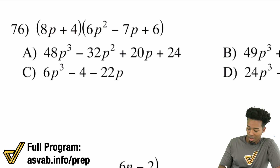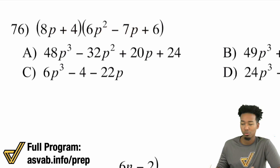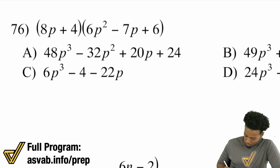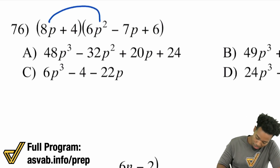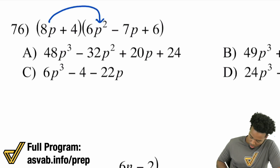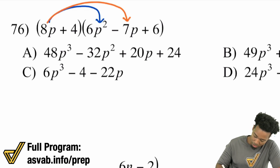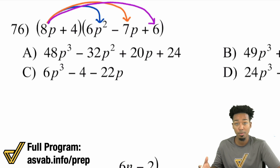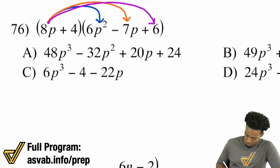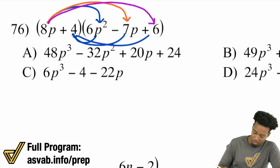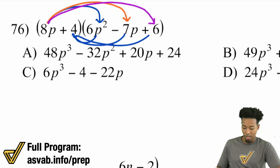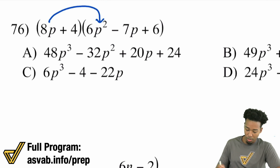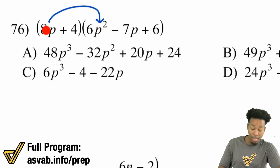Let's look at our first example. We have two terms here and three terms here. Super straightforward. We're going to make sure that 8p multiplies with 6p², that 8p multiplies with negative 7p, and that it also multiplies with the 6 at the end. Then make sure the 4 goes with each of those three terms as well. Since there are three terms, 8p needs to go three times.